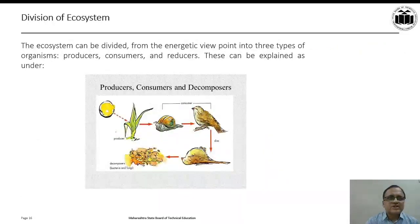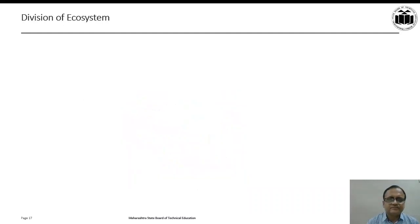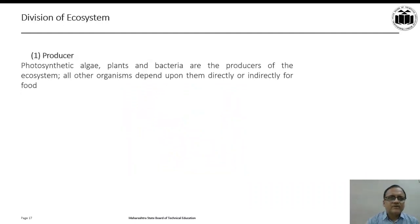The next topic of discussion is division of ecosystem. The ecosystem can be divided from the energetic viewpoint into three types of organisms that is producers, consumers, and reducers. These can be explained as follows. First, producers: photosynthetic algae, plants and bacteria are the producers of the ecosystem. All other organisms depend upon them directly or indirectly for their food.